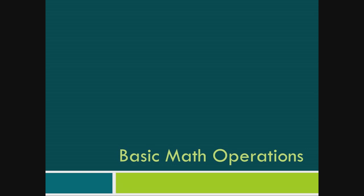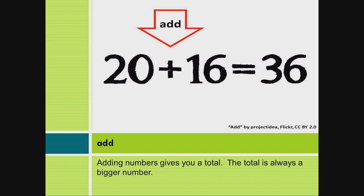Basic math operations. Add. Adding numbers gives you a total. The total is always a bigger number.